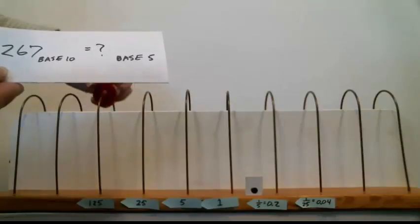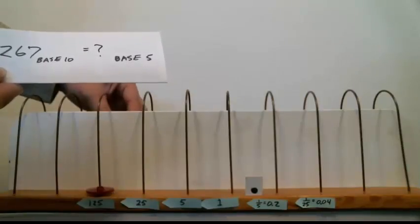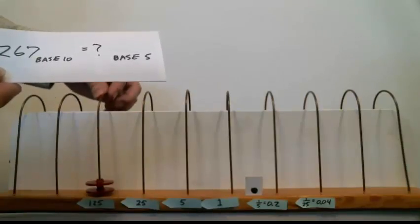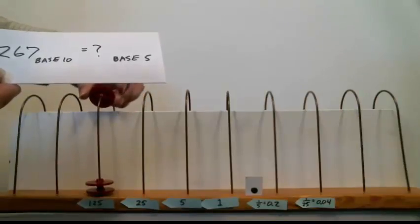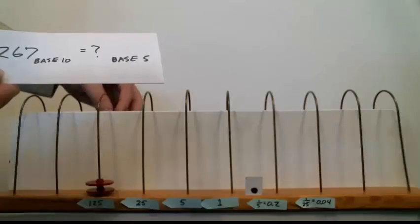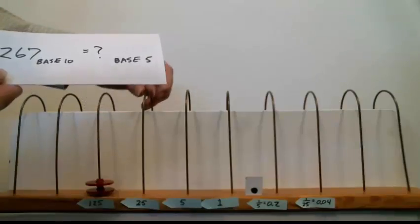I start counting by 125. So there's 125, there is 250. If I try to put another bead on the wire, it's too big. That's 375. I can't use that one. So let's shift over to the next wire.